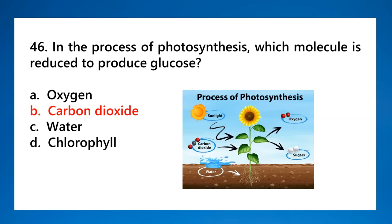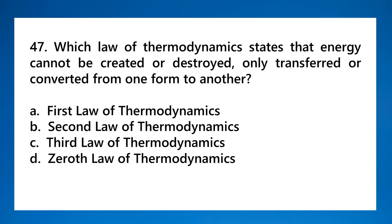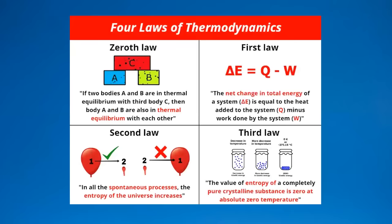Third law: the value of entropy of a completely pure crystalline substance is zero at absolute zero temperature. Absolute zero is the lowest possible temperature, zero Kelvin. Number forty-eight: in a redox reaction, which substance is oxidized? The one that loses electrons. Oxidation means addition of oxygen or loss of electron. Reduction means gain of electron. Number forty-nine: what is the chemical name for baking soda commonly used in cooking and as an antacid? Remember, baking has letter B, sodium bicarbonate - bicarbonate also has B. Baking soda, bicarbonate. Sodium carbonate is washing soda.